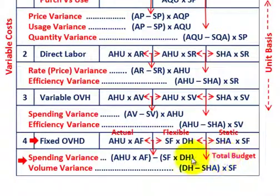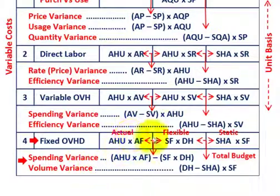So we have our spending variance between our actual and flexible amounts, and our volume variance between our flexible and static amounts.